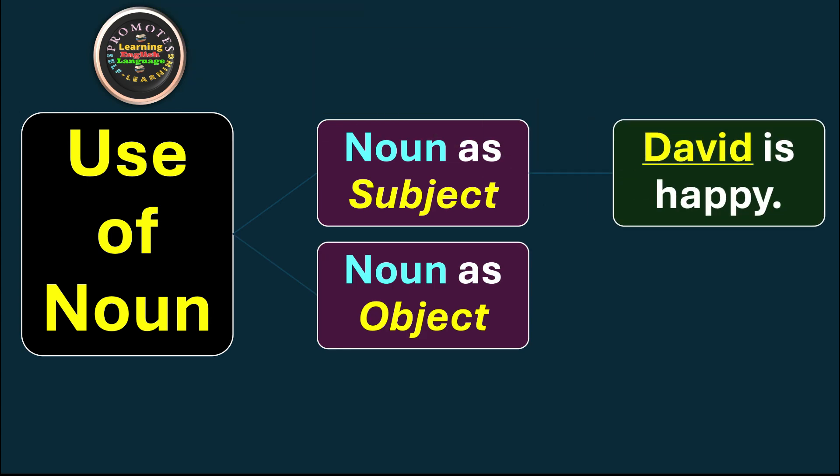As subject, we can have example: David is happy. Here the noun David refers to person, is the subject of the sentence. I love Mary. Here the word Mary is used as object.